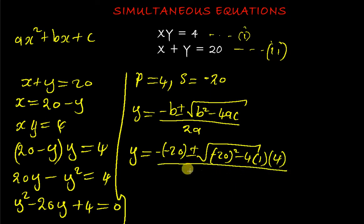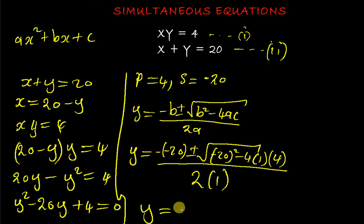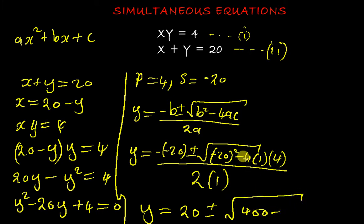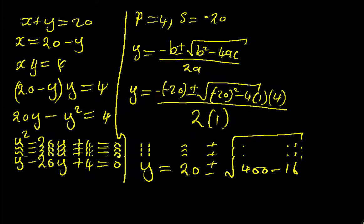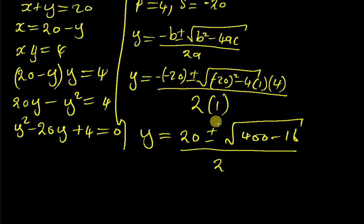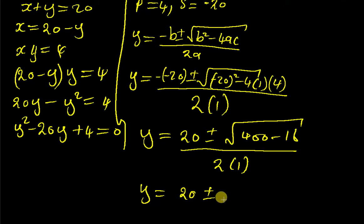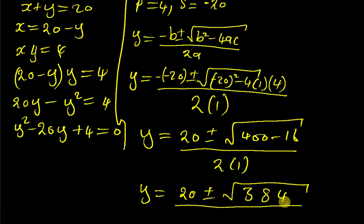Substituting into the formula: y = (−(−20) ± √((−20)² − 4 × 1 × 4)) / (2 × 1). This gives y = (20 ± √(400 − 16)) / 2, and 400 − 16 = 384, so y = (20 ± √384) / 2.